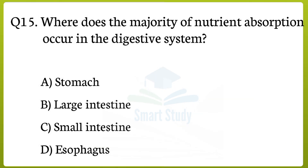Question number 15. Where does the majority of nutrient absorption occur in the digestive system? The correct answer to that question is option C: Small intestine.